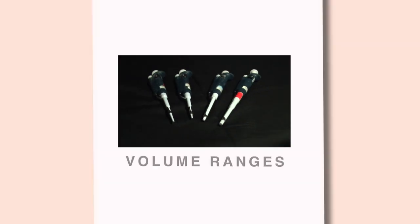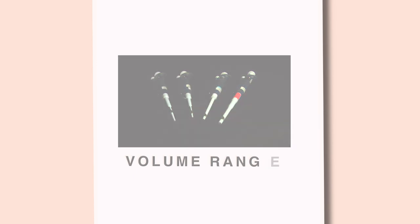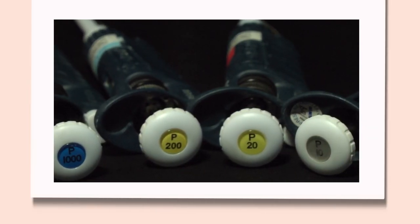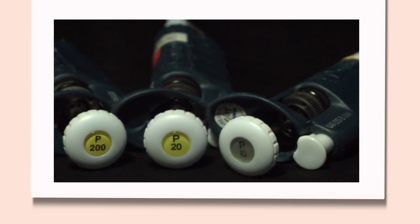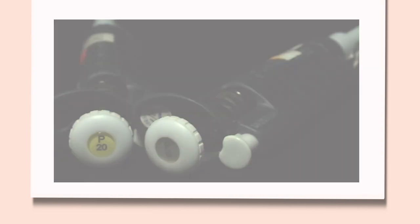Different pipettes are used for different volume ranges. We generally use four different sizes: the P1000, the P200, the P20, and the P10. The number designation for each pipetter indicates the upper range of volume in microliters that is appropriate to dispense.